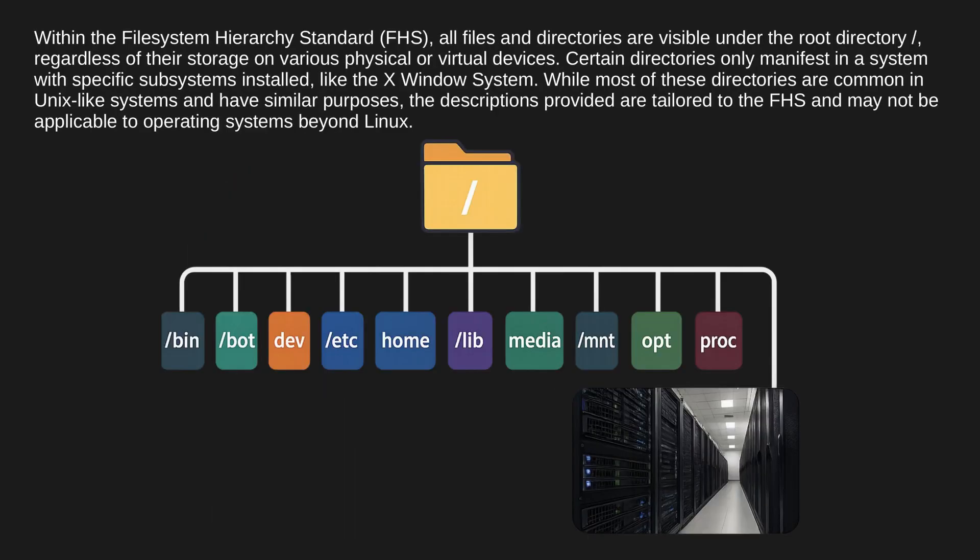Within the File System Hierarchy Standard, all files and directories are visible under the root directory slash, regardless of their storage on various physical or virtual devices. Certain directories only manifest in a system with specific subsystems installed, like the X Window system. While most of these directories are common in Unix-like systems and have similar purposes, the descriptions provided are tailored to the FHS and may not be applicable to operating systems beyond Linux.